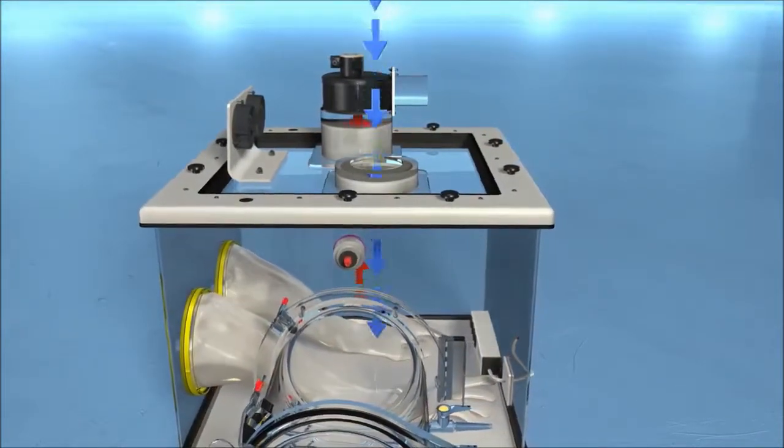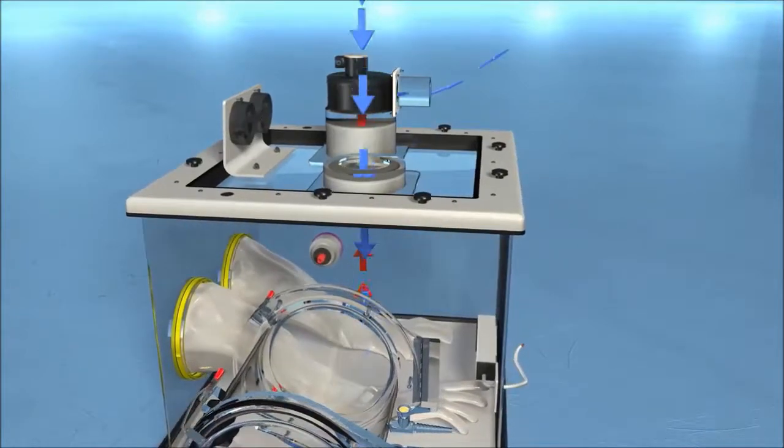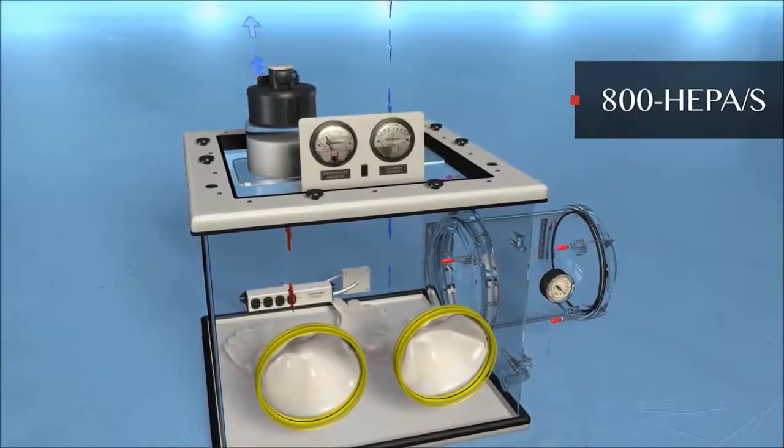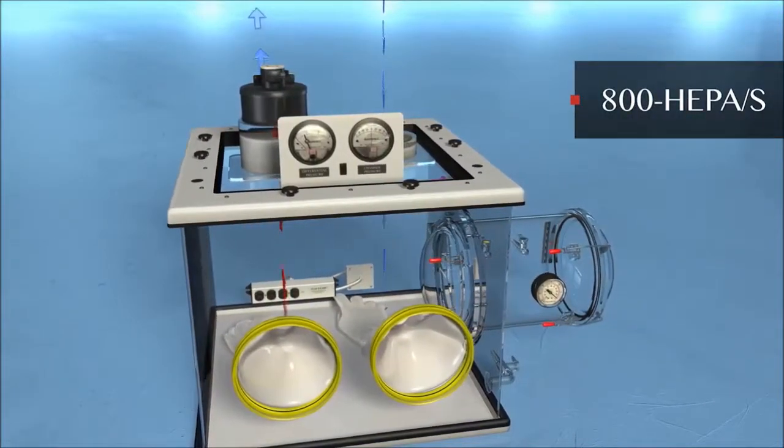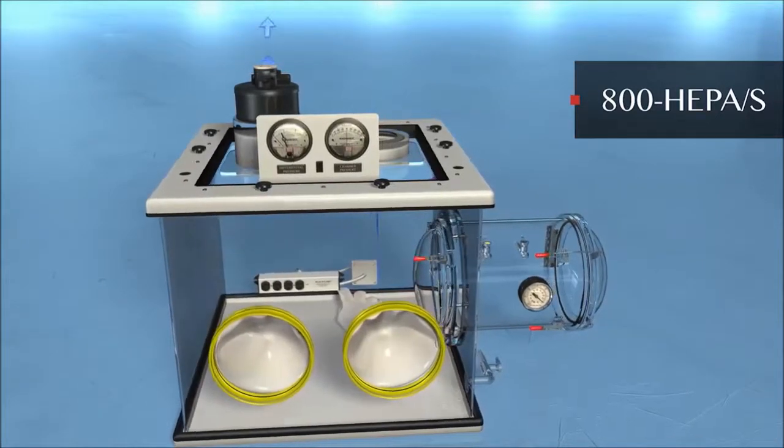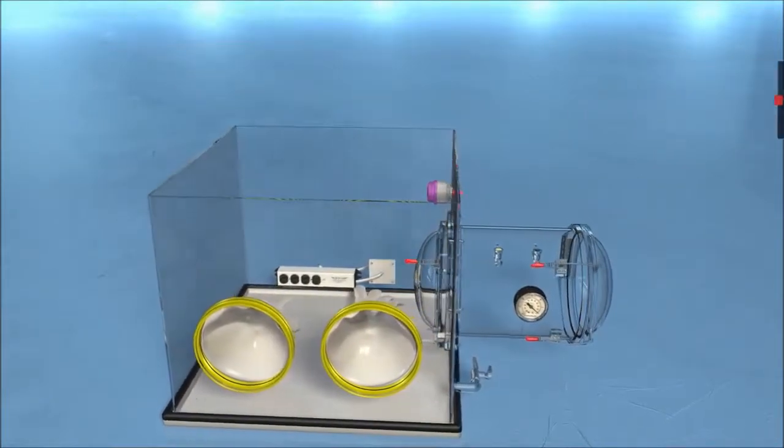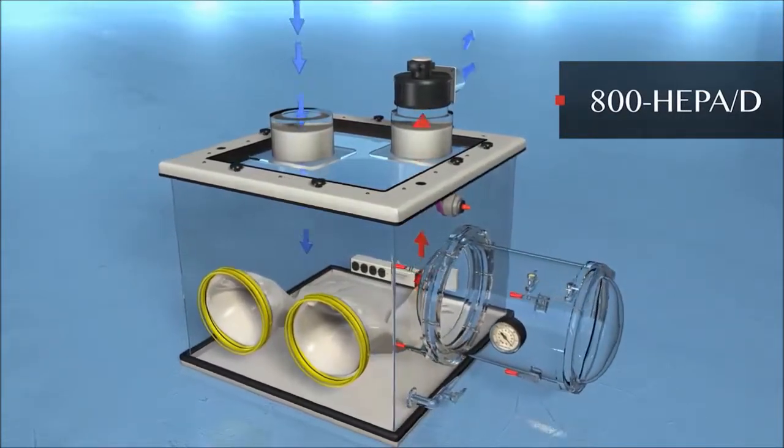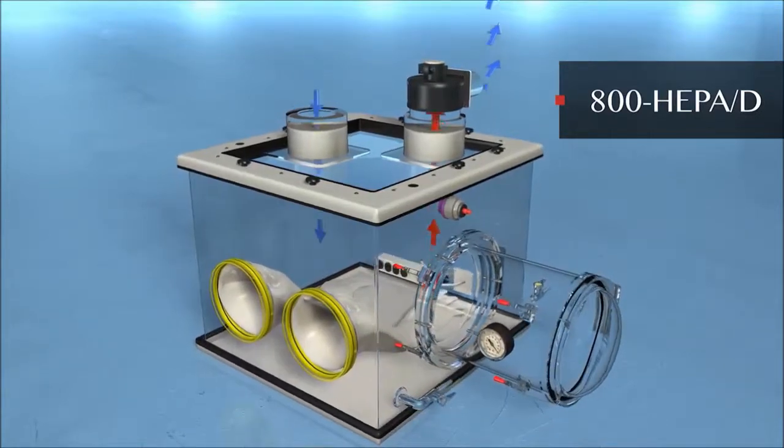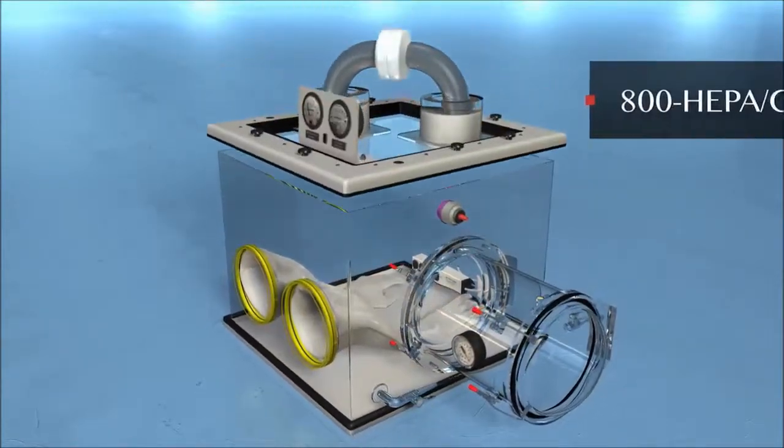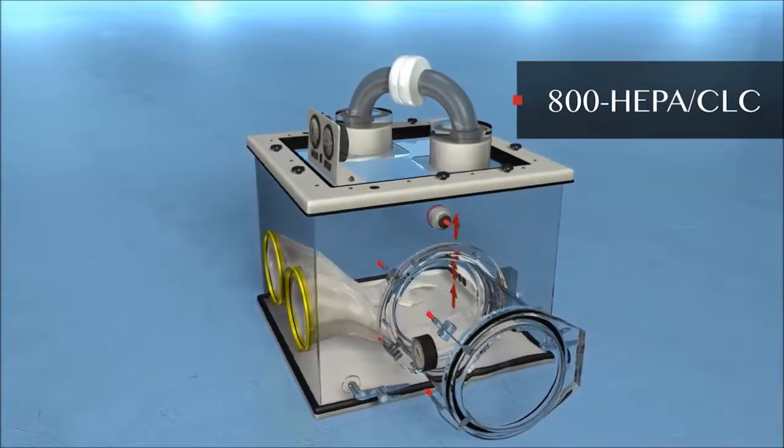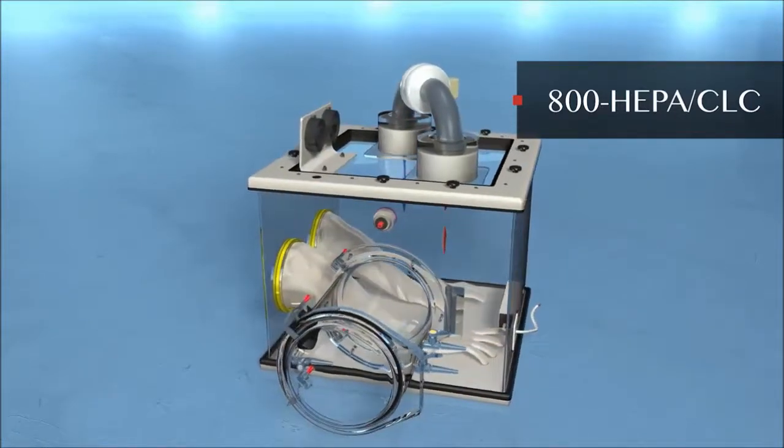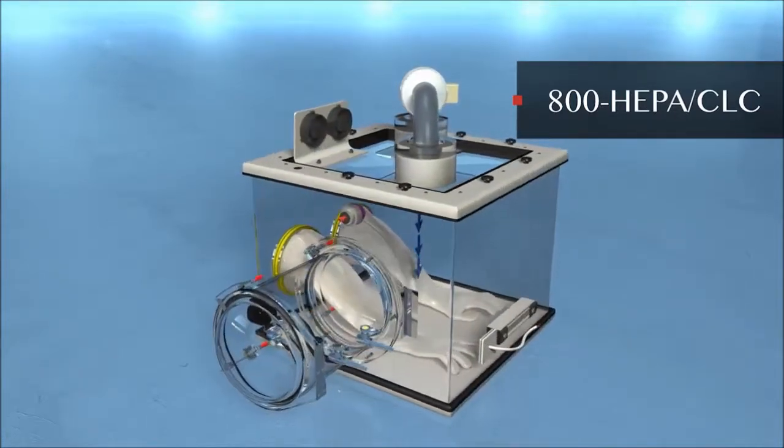Plaslabs offers three types of HEPA filtration setups: 800 HEPA-S single HEPA filtration provides HEPA filtered air into or out of the glove box. 800 HEPA-D double HEPA filtration system: HEPA filter closed-loop filtration system continuously circulates the internal atmosphere through two 8-inch round HEPA filters.